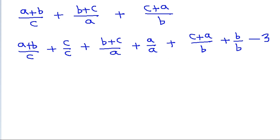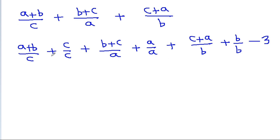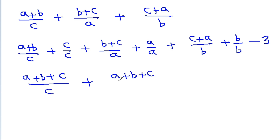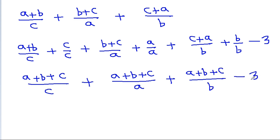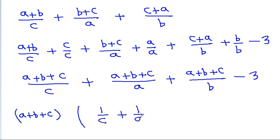Now, (a + b)/c + c/c gives (a + b + c)/c, (b + c)/a + a/a gives (a + b + c)/a, and (c + a)/b + b/b gives (a + b + c)/b, minus 3. We can take (a + b + c) as common, giving (a + b + c) times (1/c + 1/a + 1/b) minus 3.